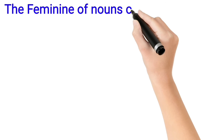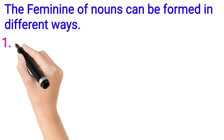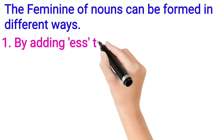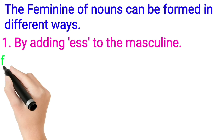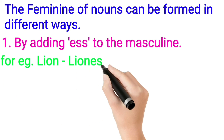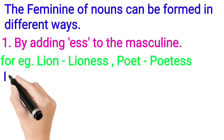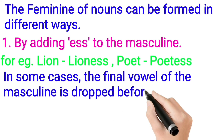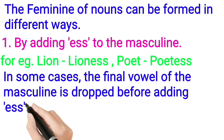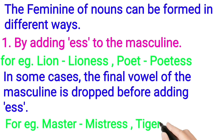The feminine of nouns can be formed in different ways. First way: by adding -ess to the masculine. For example, Lion becomes Lioness, Poet becomes Poetess. In some cases, the final vowel of the masculine is dropped before adding -ess. For example, Master becomes Mistress, Tiger becomes Tigress.